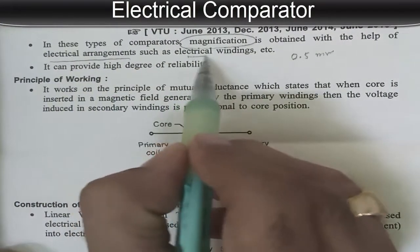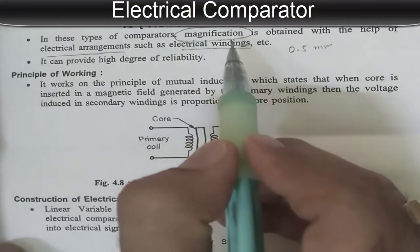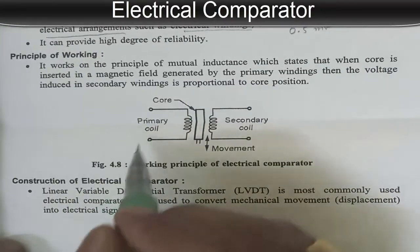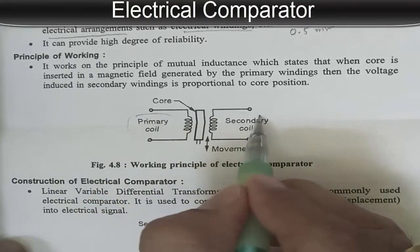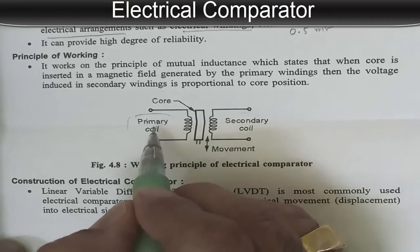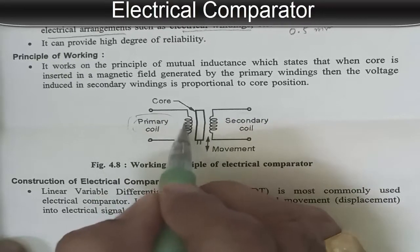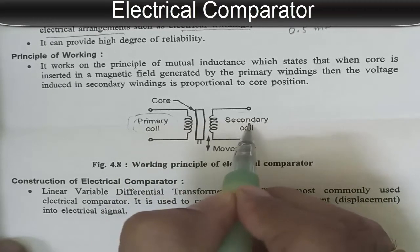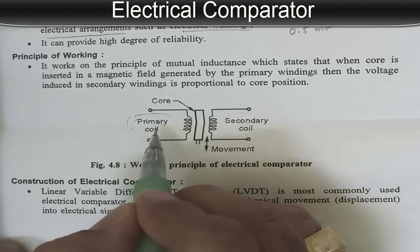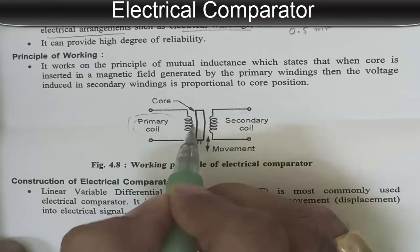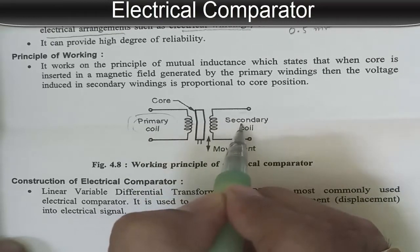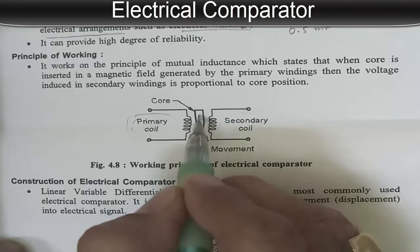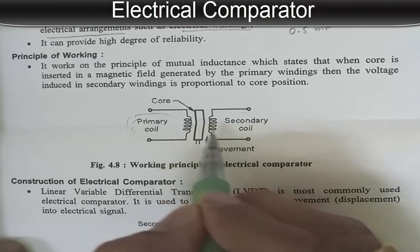Magnification is obtained with the help of an electrical arrangement such as electrical winding. Now let us understand the principle of working. Here you can see the primary coil and secondary coil. Magnetic field is generated by the primary winding, and voltage is induced in the secondary winding, which is proportional to the core position. If the position of the core changes, the induced voltage also changes.